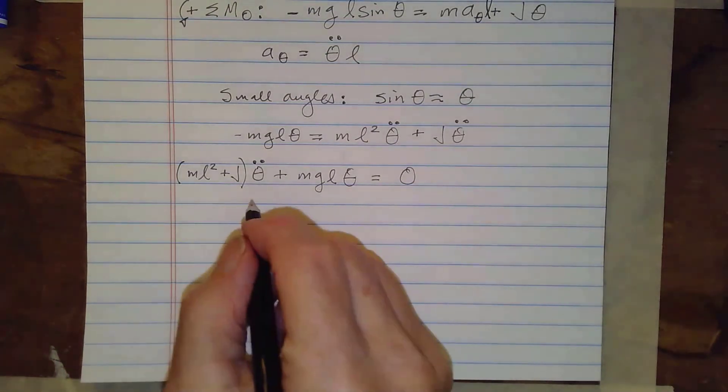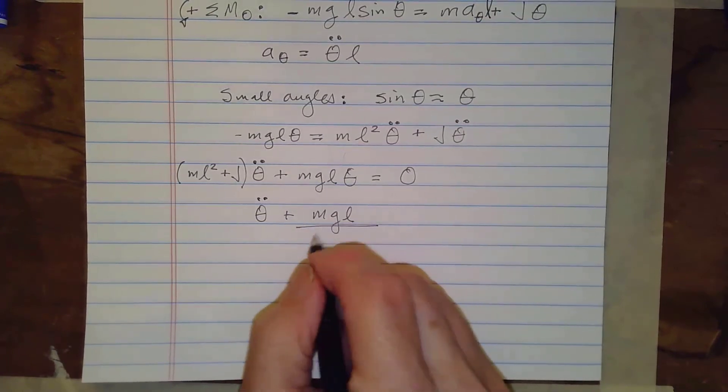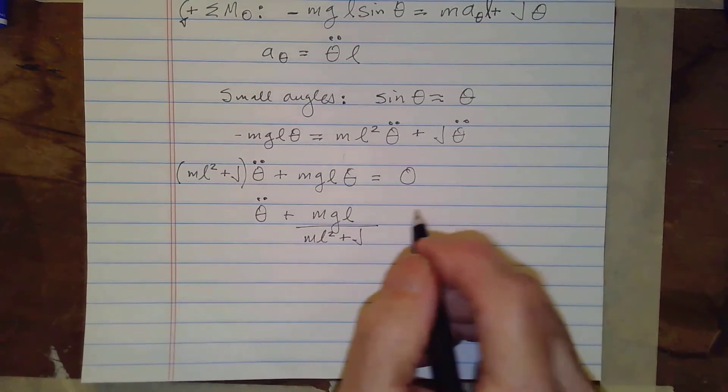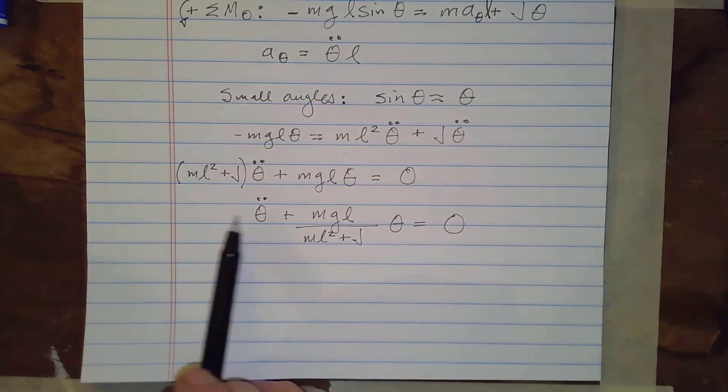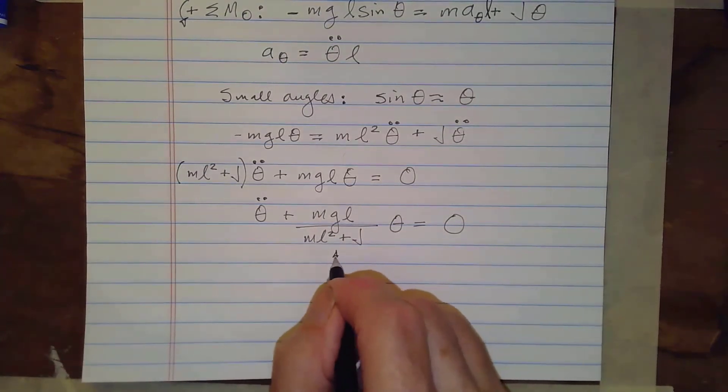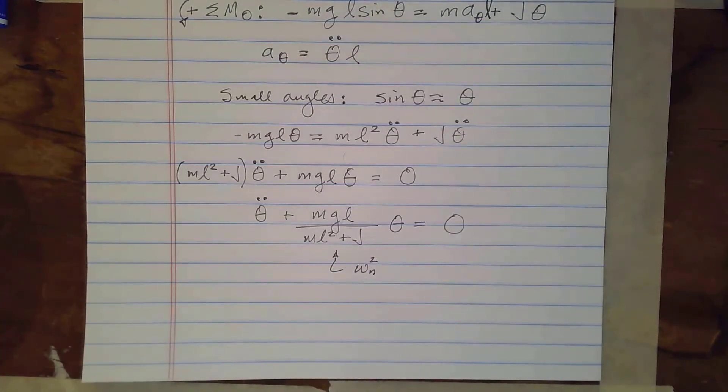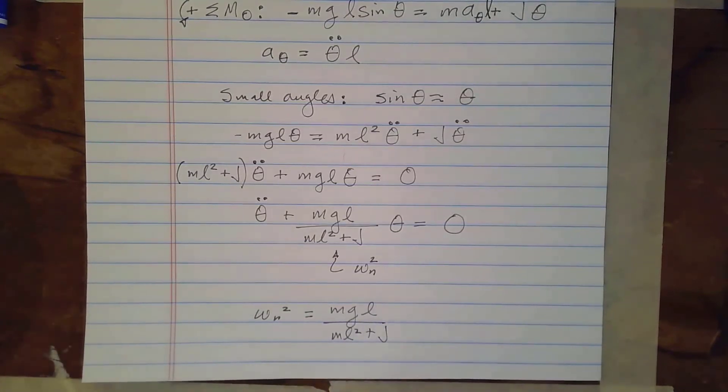Now remember what happens here is this theta double dot plus M G L divided by M L squared plus J times theta is equal to zero. Now when you get it into this format with one here as a coefficient and this here as the coefficient of the theta term, what this is right here this is our omega n squared. Okay so we can say that omega n squared is equal to M G L over M L squared plus J.